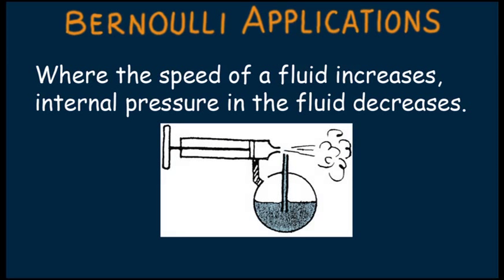The Bernoulli principle plays a role in the common hand-operated sprayer shown here. Air is moved over the top end of the tube inserted into a liquid. What does Bernoulli say about internal pressure of fast-moving air? Pressure here is reduced. But what of the room pressure of the air on the surface of the liquid inside the reservoir? It's at atmospheric pressure, greater than the lowered air pressure atop the tube.